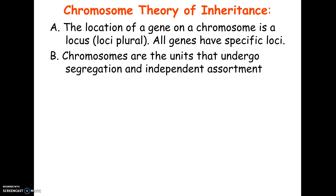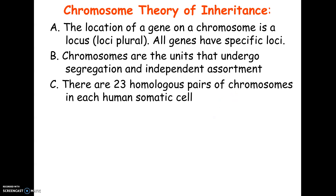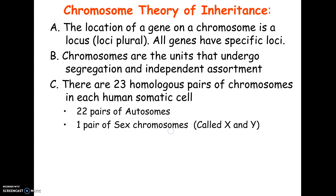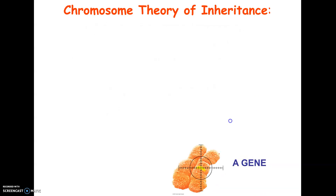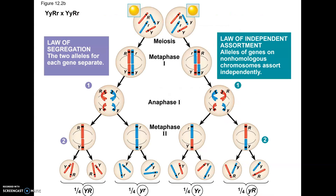All genes have specific loci on chromosomes, and chromosomes are the units that undergo segregation and independent assortment — Mendel's principles. As a reminder from meiosis, there are 23 homologous pairs in a human somatic cell, meaning 46 total chromosomes. 22 pairs are called autosomes and one pair is the sex chromosomes: XX is female, XY is male.